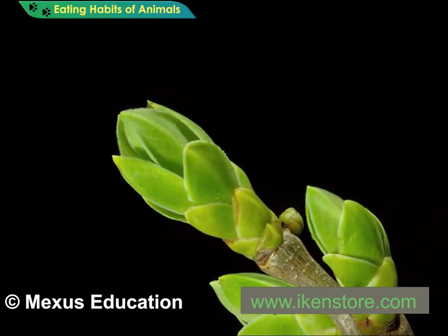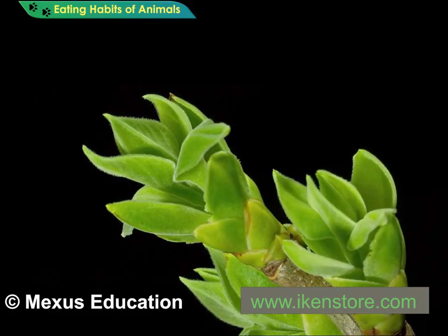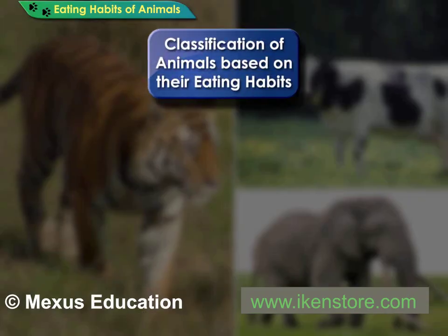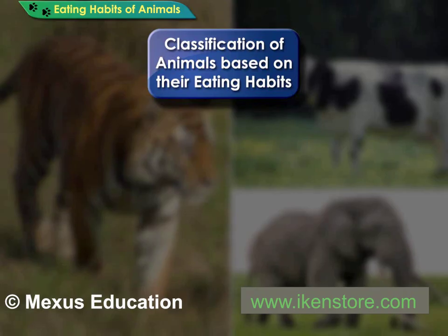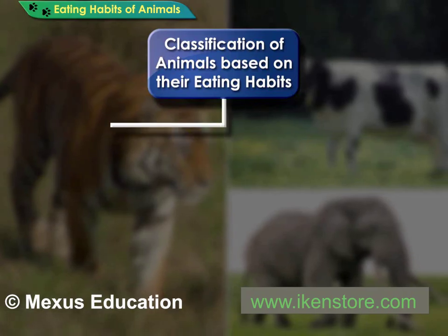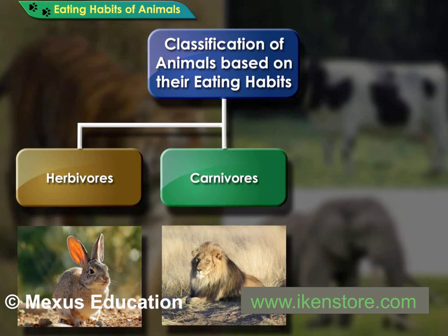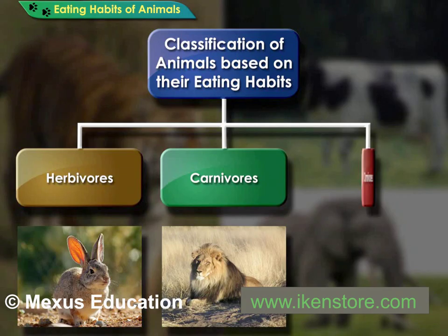Unlike plants, animals cannot make their own food. Depending on their eating habits, animals can be classified as herbivores, carnivores, and omnivores.